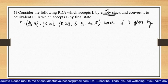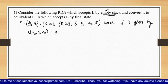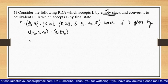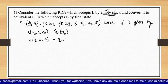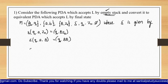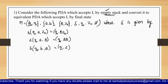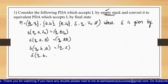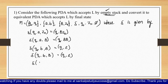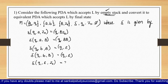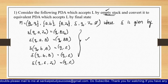The transition functions for the given PDA are: delta(Q-naught, a, Z-naught) = (Q-naught, BZ-naught); delta(Q-naught, a, B) = (Q-naught, BB); delta(Q-naught, b, B) = (Q1, epsilon); delta(Q1, b, B) = (Q1, epsilon); and delta(Q1, epsilon, Z-naught) = (Q1, epsilon). This is the complete PDA accepted by empty stack which we need to convert.